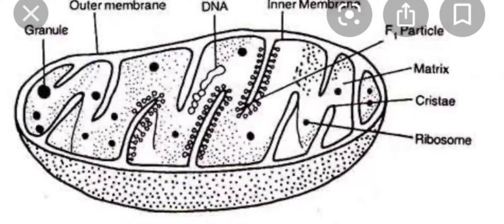In between the outer and the inner membrane is a space which is known as mitochondrial space, and the inner membrane has finger-like folds which are known as cristae.